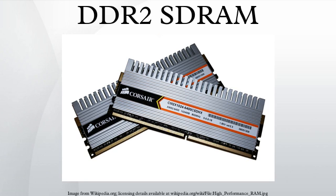The DDR2 prefetch buffer is 4-bits deep, whereas it is 2-bits deep for DDR and 8-bits deep for DDR3. While DDR-SDRAM has typical read latencies of between 2 and 3 bus cycles, DDR2 may have read latencies between 4 and 6 cycles. Thus, DDR2 memory must be operated at twice the data rate to achieve the same latency.